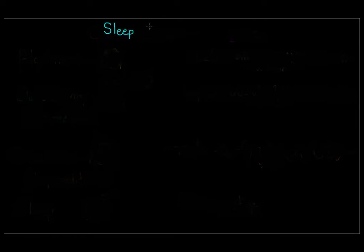Even though you're not conscious during sleep, your brain is deceptively active. It goes through multiple cycles with distinct brain patterns, and it's very important to your ability to perform normal functions when you're awake. You have four main stages of sleep which occur in approximately 90-minute cycles during a normal night of sleep.